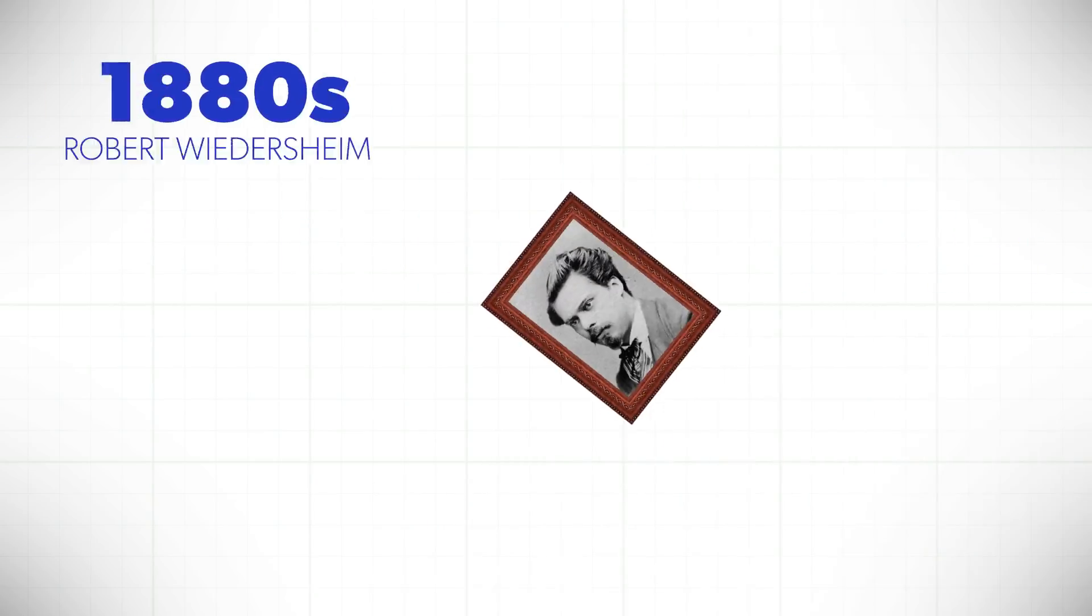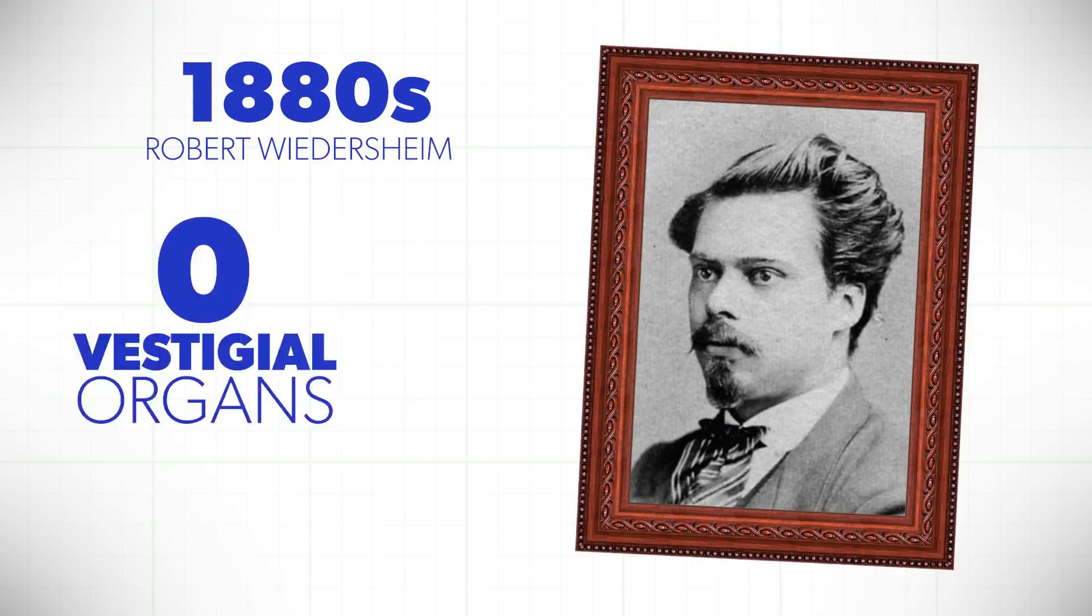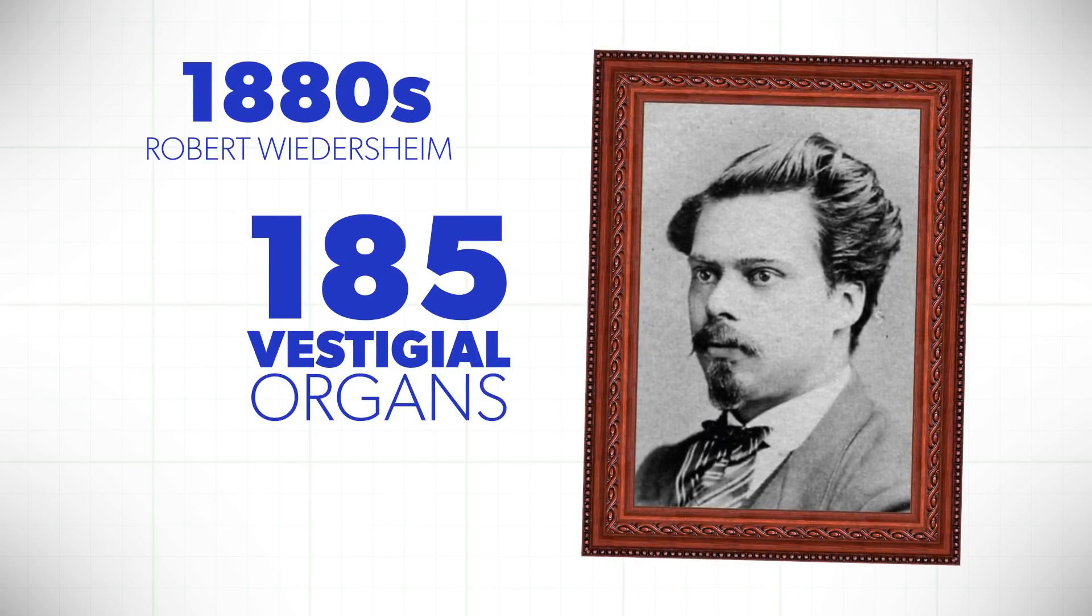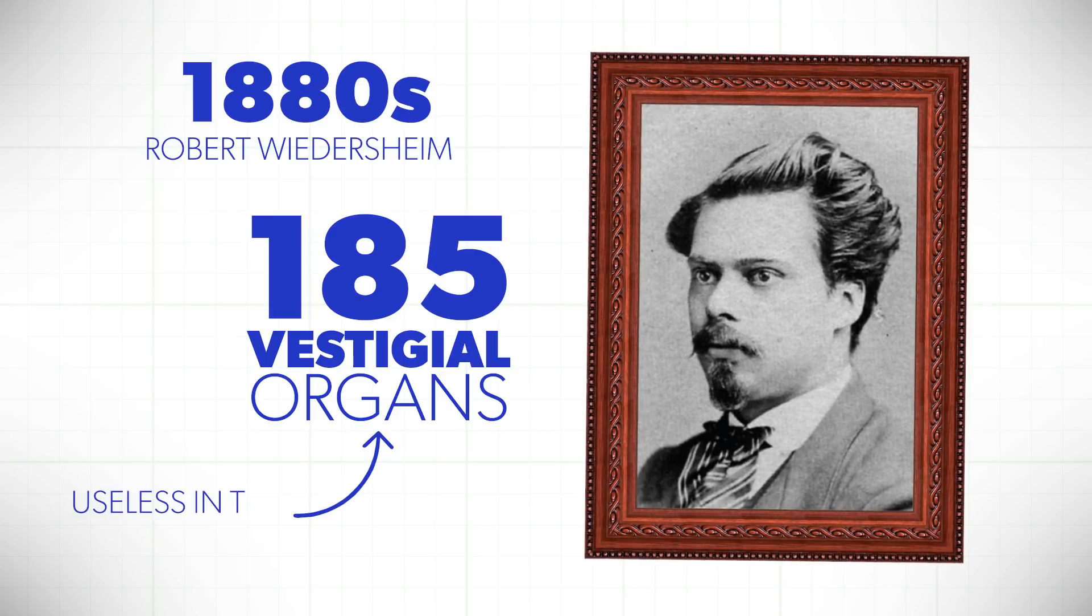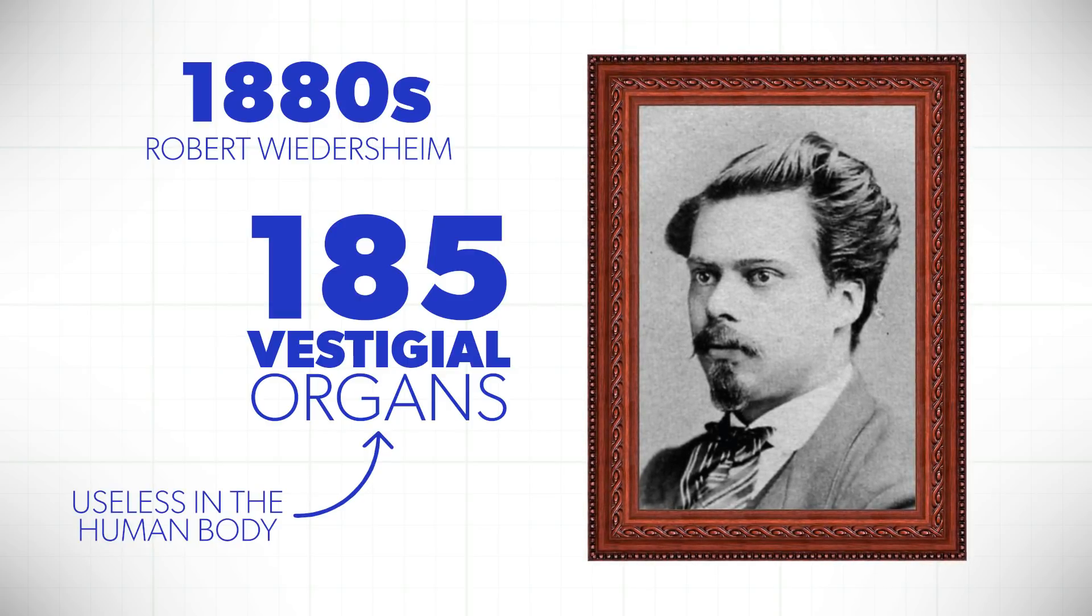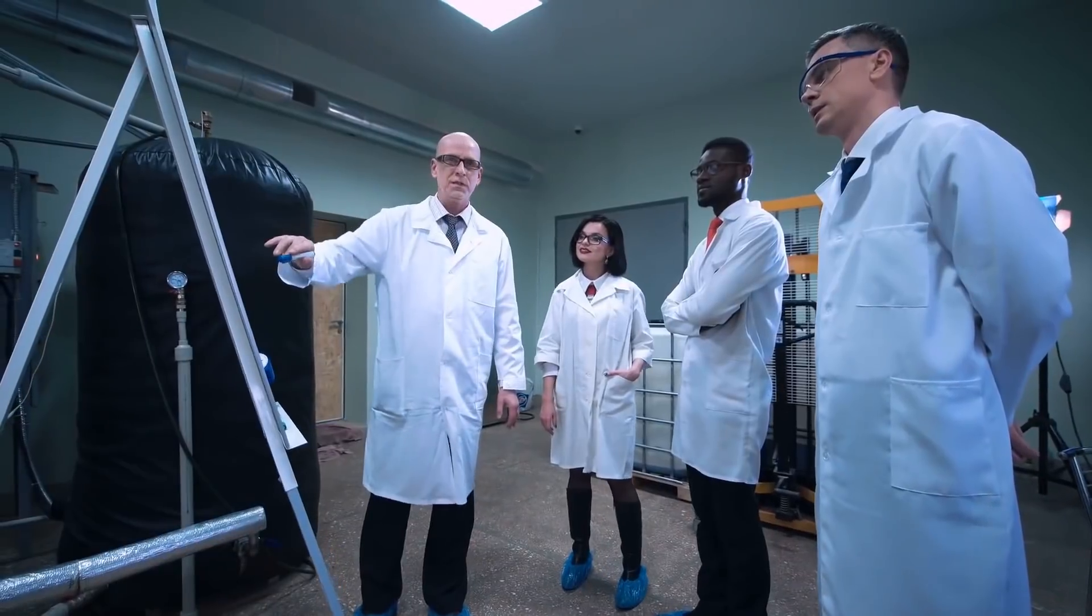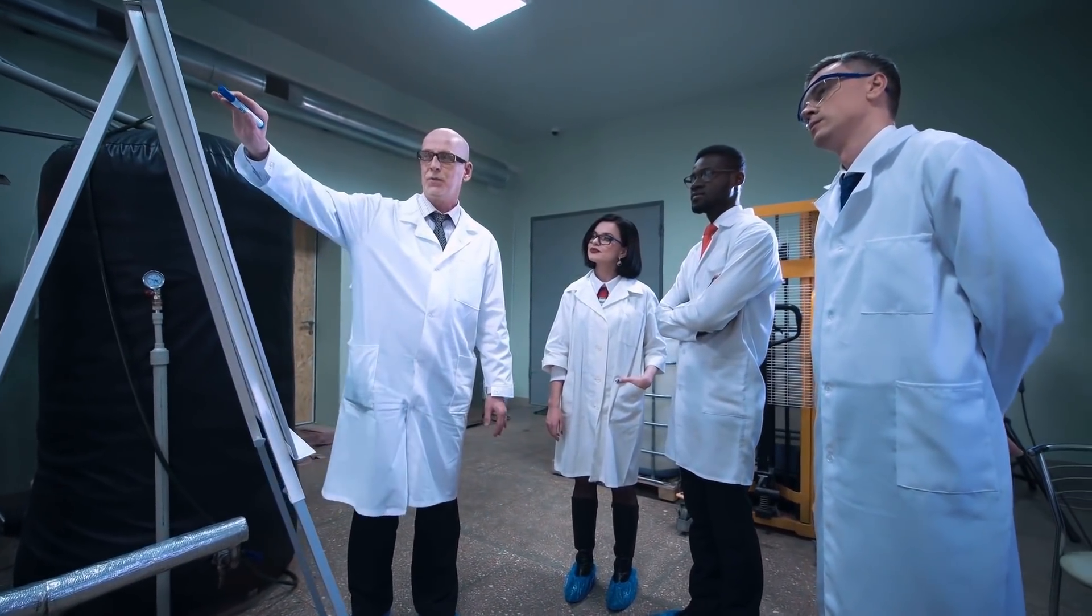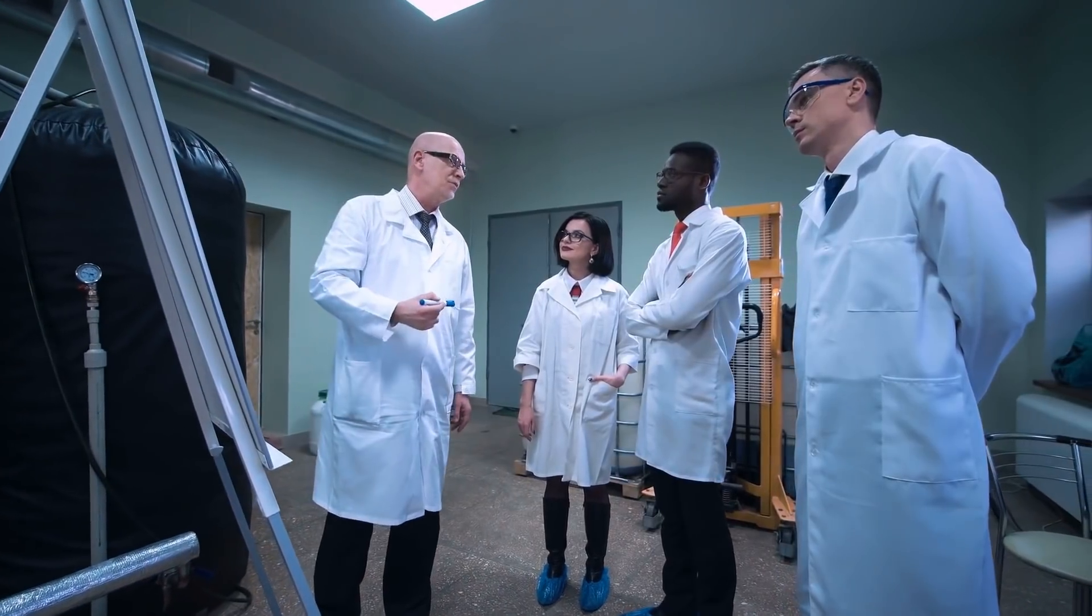You see, in the late 1880s, it was suggested that there were over 185 vestigial organs. Organs that were virtually useless or completely useless in the human body. What do you think happened as medical scientists and researchers started looking more closely at the human body?